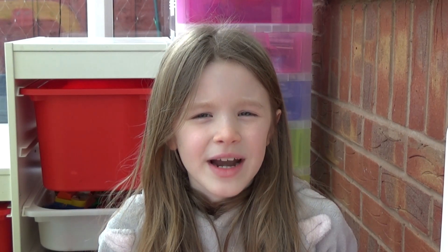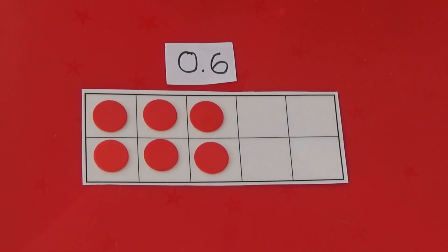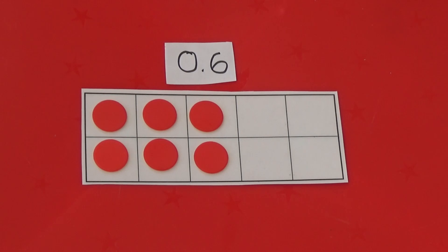I can also use tens frames to make decimal numbers. Instead of the tens frame being worth ten, it is worth one. Each box is worth one tenth or zero point one. Here I have six counters so the number I am representing is zero point six.